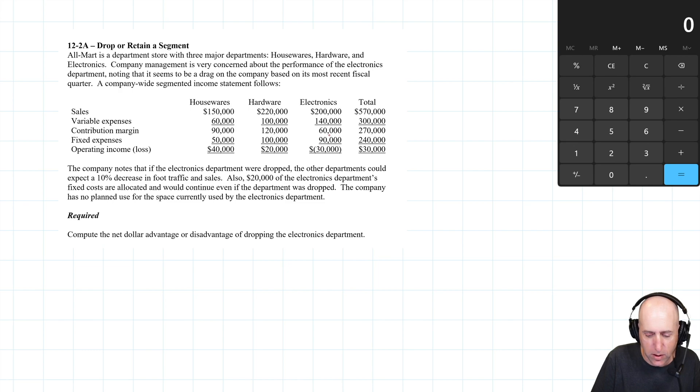So $20,000 of these fixed costs will remain. The company has no planned use for the space currently used by the electronics department. It says compute the net dollar advantage or disadvantage of dropping this department.